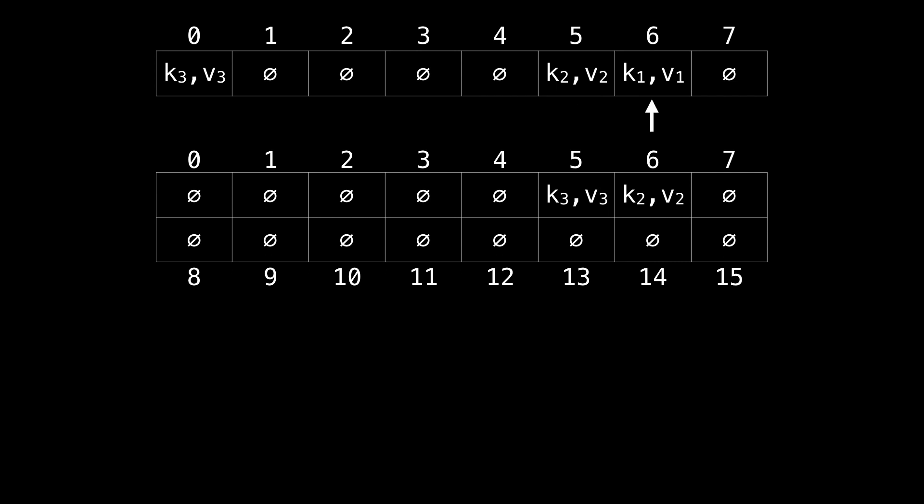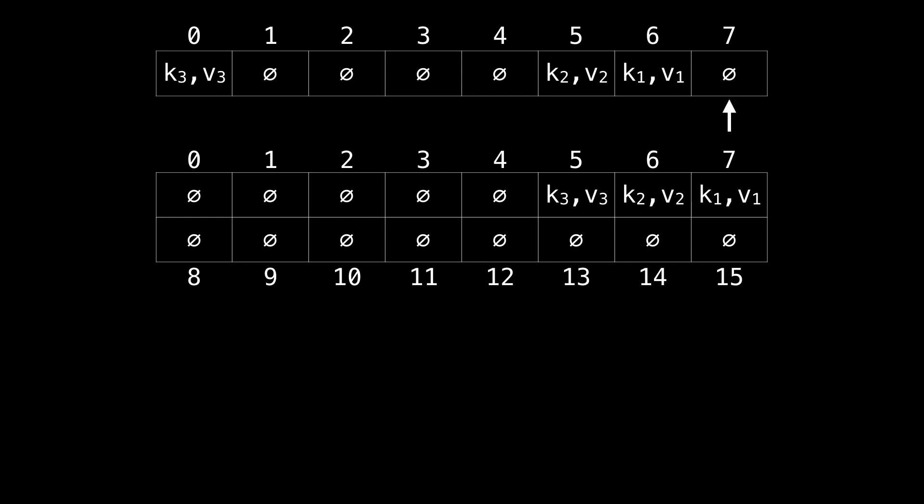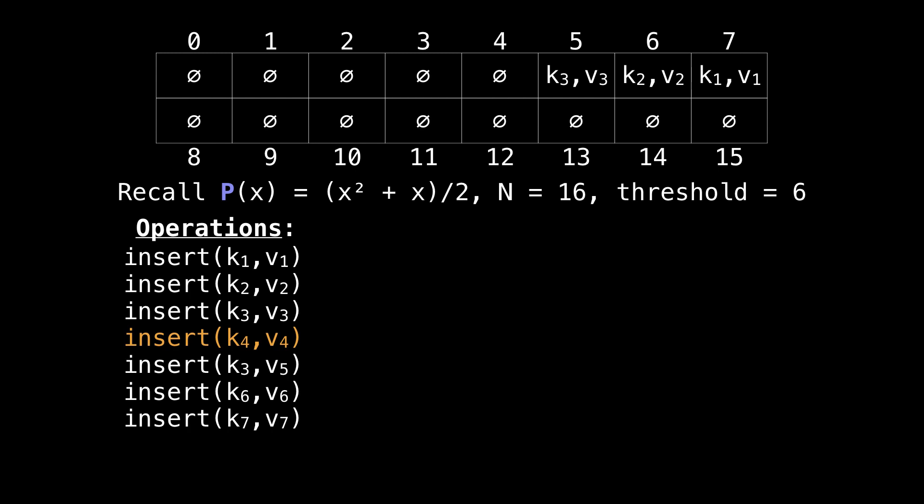Now let's try and insert k1. We know from before k1 hashed to 6, but we can't put it there because we have a collision, so we're going to probe along, and put it in position 7. Alright, and that does it for resizing the table.